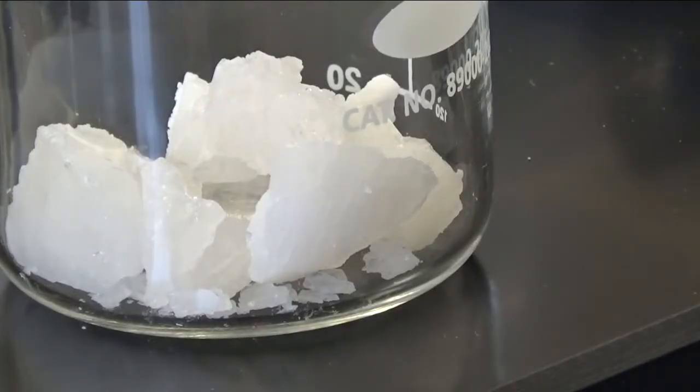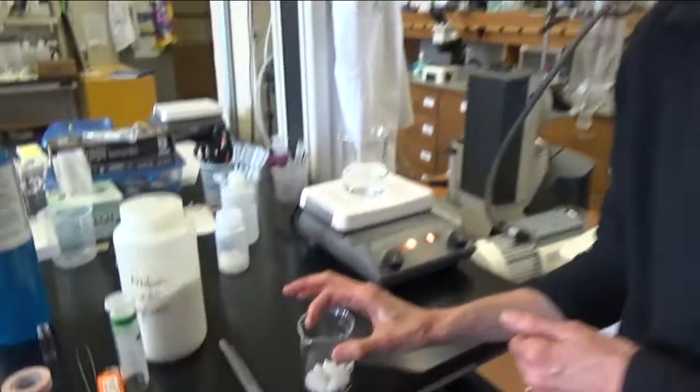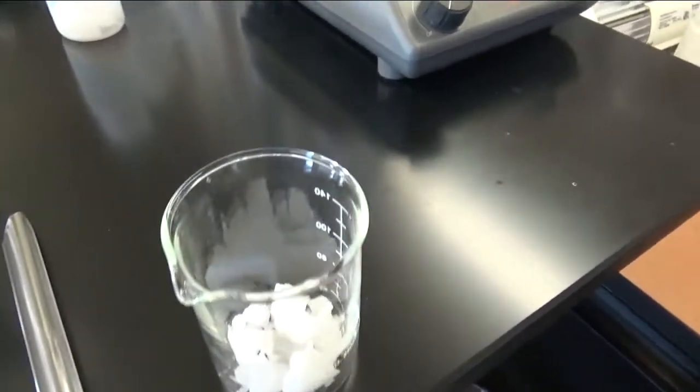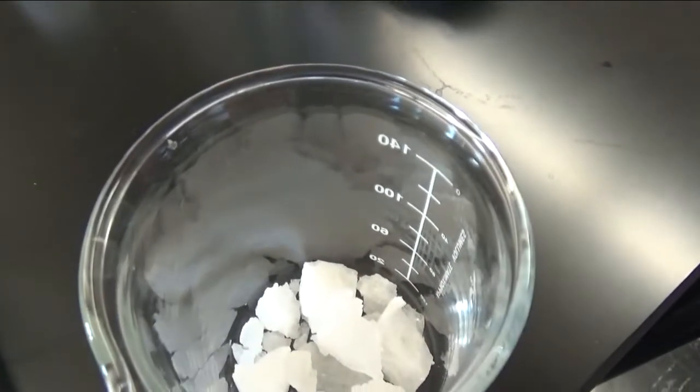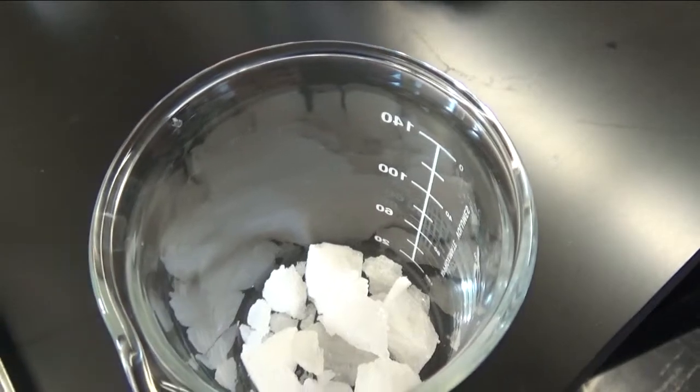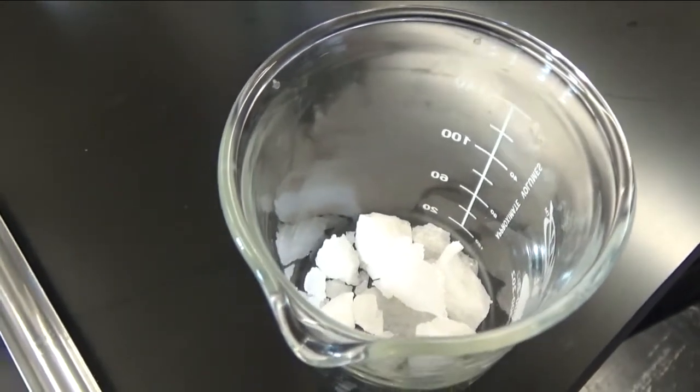Over time, what grows are these beautiful crystals. Polyoxoniobate, a compound Nyman says deactivates nerve gas when it comes in contact with it. It replaces that PF bond with a P hydroxide bond.